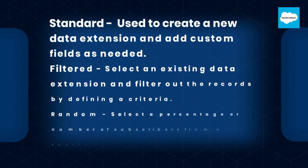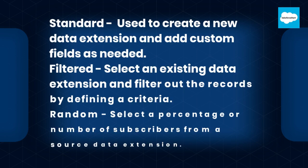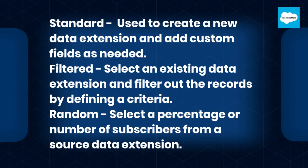Standard – Used to create a new data extension and add custom fields as needed. Filtered – Select an existing data extension and filter out the records by defining a criteria. Random – Select a percentage or number of subscribers from a source data extension.